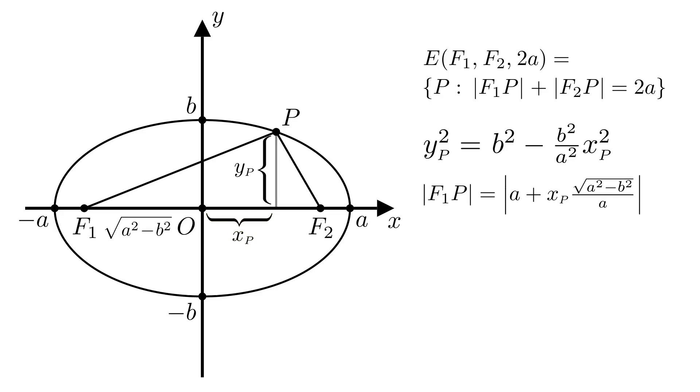But xP is always between negative a and a. And you can verify that the expression inside the absolute value will always be positive. Which means that |F1P| is equal to a plus xP times the square root of a squared minus b squared over a.